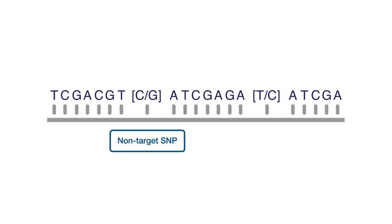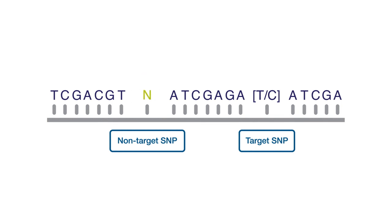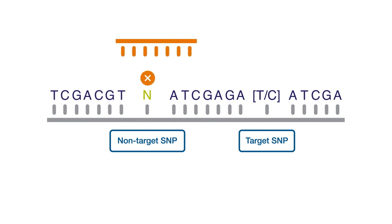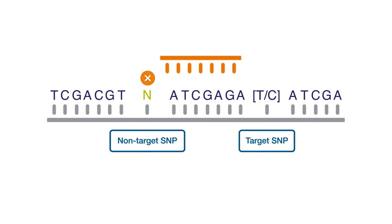First, we recommend masking non-targeted SNPs in the sequence that you are submitting. Masking is the process of substituting an N for an existing base. The custom SNP assay design pipeline will not design a primer or probe that spans a masked base. The pipeline will move upstream or downstream to another area of the sequence for assay design.